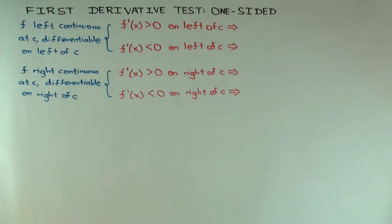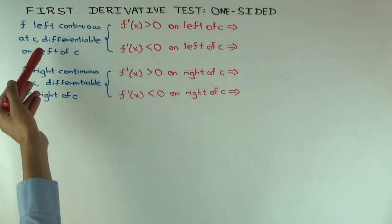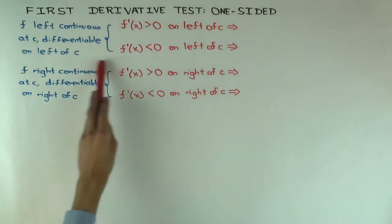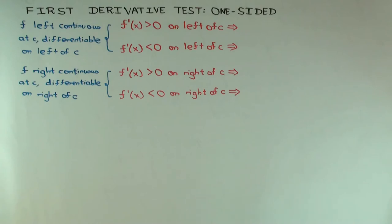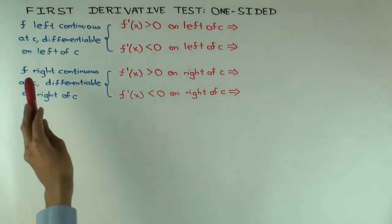Here I have a function f of one variable and a point c in the domain. I first consider the left side and then the right side. For the left side, my assumption is that f is left continuous at c — that means f(c) equals the left-hand limit. I'm also assuming f is differentiable on the left of c, meaning that for x to the immediate left of c, f prime of x is defined. I'm not saying that the left-hand derivative of f at c exists; I'm not saying anything about the differentiability of f at c.